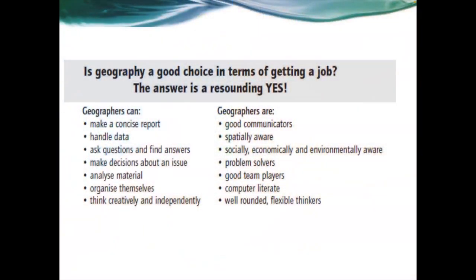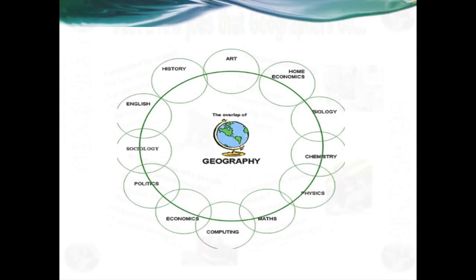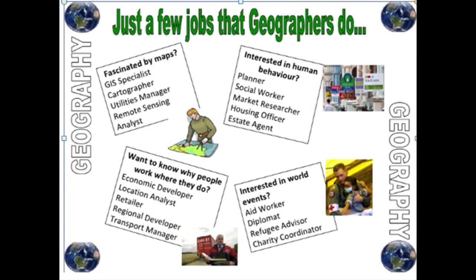Geographers are organised and able to complete complex tasks based on written and numerical sources. Geography develops a lot of transferable skills into other subject areas. Progression is often into Higher for pupils who are successful in National 5 in S4. For those who achieve National 4, they can go on to study National 5 in the senior phase. Being both a science and an art means that geography opens a wide range of careers for pupils.